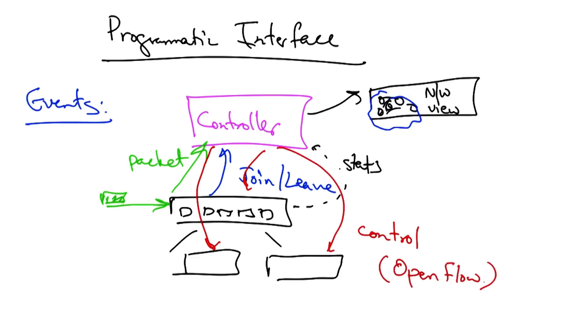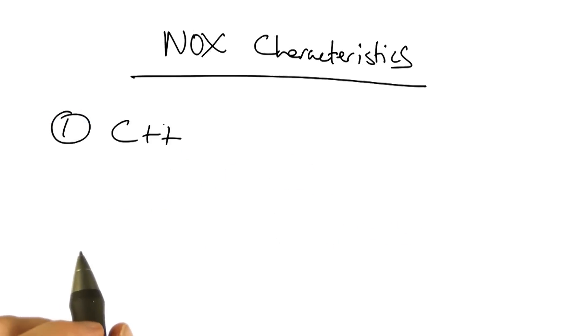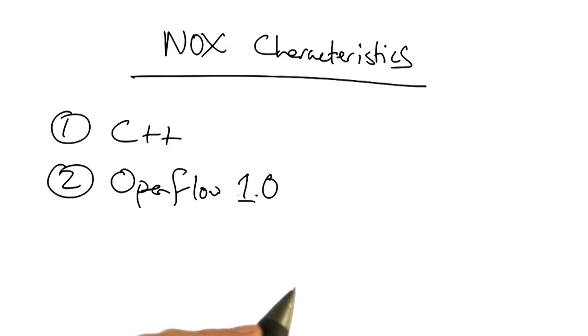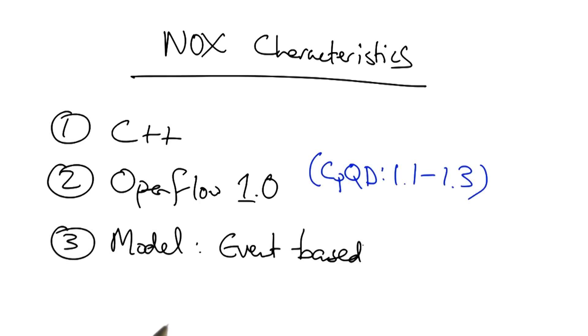The Nox controller implements the OpenFlow protocol. Nox is implemented in C++ and supports OpenFlow 1.0. A fork of Nox called CPQD supports versions 1.1, 1.2, and 1.3. The programming model is event-based, and a programmer can write an application by writing event handlers for the Nox controller.